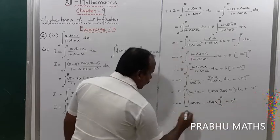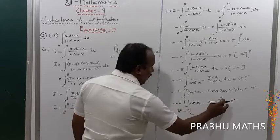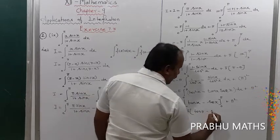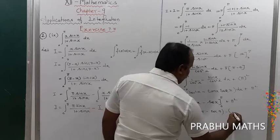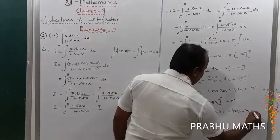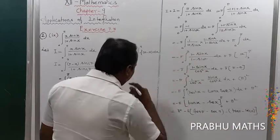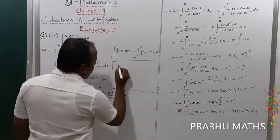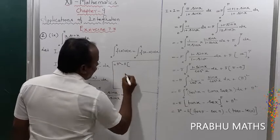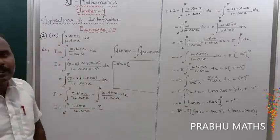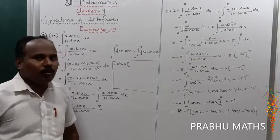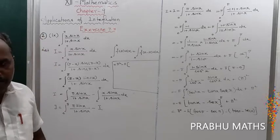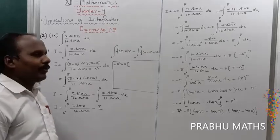Substituting the limits: 2I equals π² minus π times [(tan π minus sec π) minus (tan 0 minus sec 0)]. Now tan π equals 0 since π equals 180° and tan 180° equals 0. Sec π equals 1 divided by cos π, and cos π equals minus 1, so sec π equals minus 1.